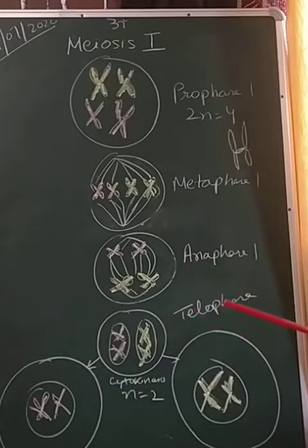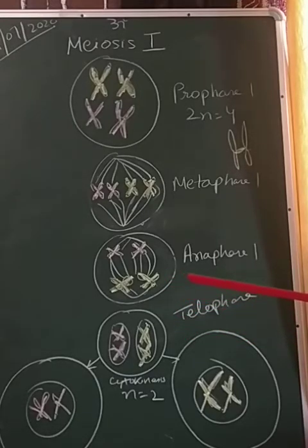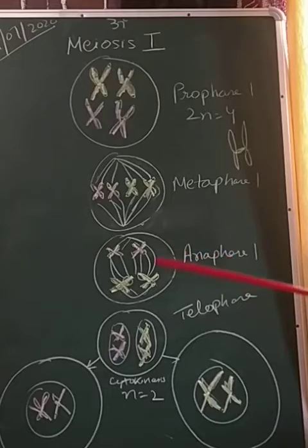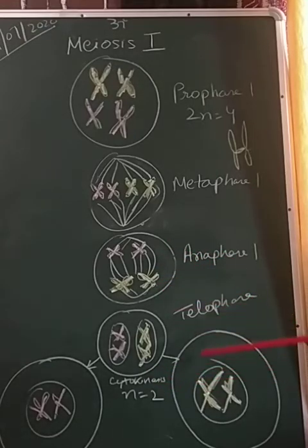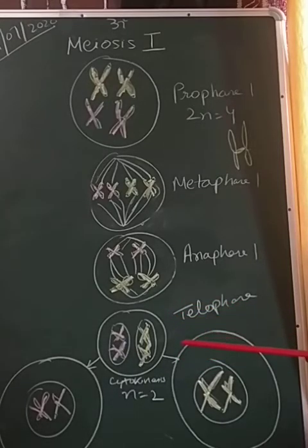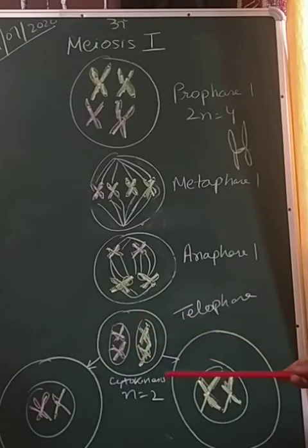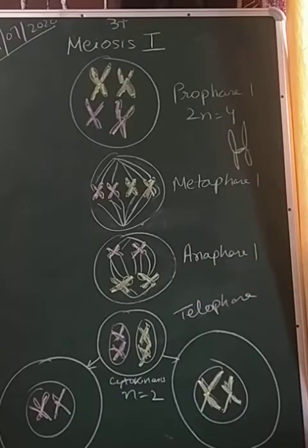In many cases, the chromosomes do undergo some dispersion but do not reach the extremely extended state of the interphase nucleus. The stage between the two meiotic divisions is known as interkinesis, because after this one more stage follows — meiosis two. Interkinesis is followed by prophase two, which is a much simpler prophase than prophase one.